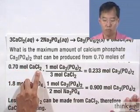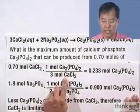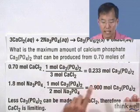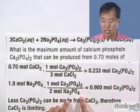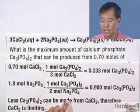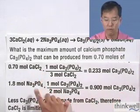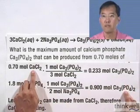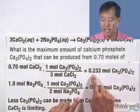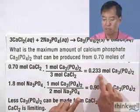Let's repeat this problem using Method 2. Method 2 says we calculate how much calcium phosphate we make from each reagent and figure out which one gives the least. We have 0.7 moles of calcium chloride times 1 mole of calcium phosphate over 3 moles of calcium chloride, which yields 0.233 moles of calcium phosphate. If we repeat that calculation with 1.8 moles of sodium phosphate — using the appropriate fraction from the balanced reaction — we get 0.90 moles of calcium phosphate. Clearly we would run out of calcium chloride well before using up all the sodium phosphate, so calcium chloride is the limiting reagent and the maximum amount of calcium phosphate we can make is 0.233 moles.